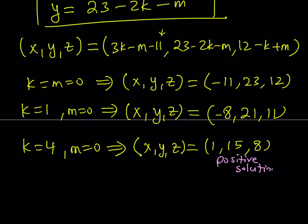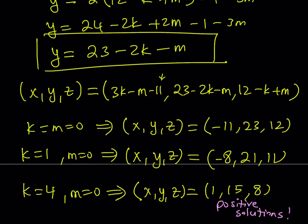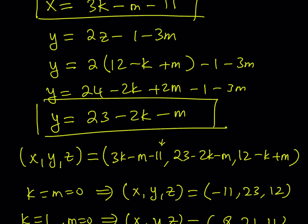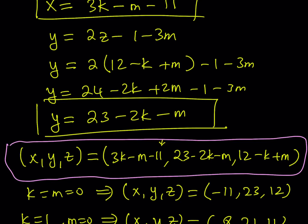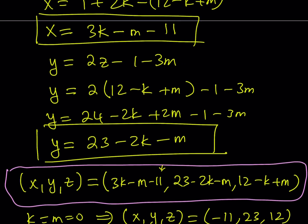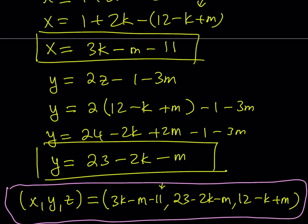Our solution consists of this ordered triple where k and m are both integers. Basically, you can express the solution as a parametric solution which means that you can run through all the values of k and m as long as they're integers and you can get infinitely many solutions to this linear Diophantine equation.